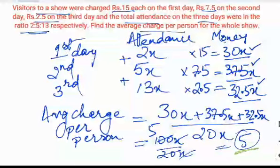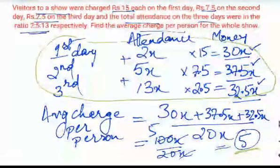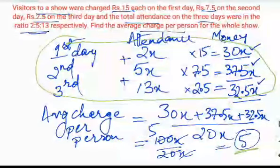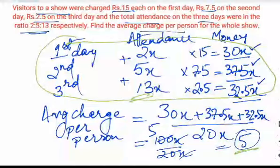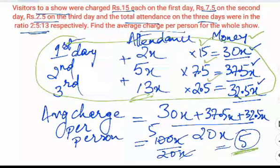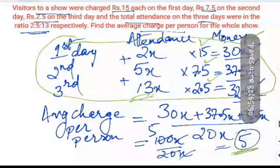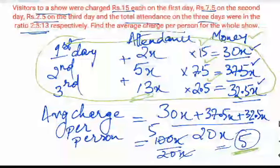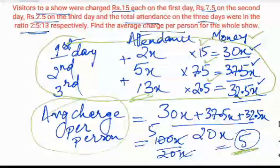So the average charge comes out to be ₹5 per person for the whole three days. Whatever the total number of persons — whether in ratio 2x, 5x, or 13x — the average charge per person for the whole show is ₹5 per person.